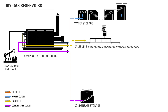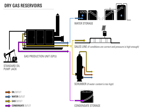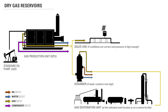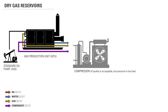The gas will exit the GPU and, if conditions are correct and the pressure is already high enough, it will continue directly into a sales line. If the water content of the gas is too high, a large scrubber is used to remove the additional liquids and further clean the gas before it travels into a sales line. If further separation is needed, it will flow into a gas dehydration unit, either at individual well locations or at a central facility, before returning to the sales line. If the quality of the gas is acceptable but the pressure is too low, a compressor will be used to increase the pressure before it is sent downstream into a sales line.